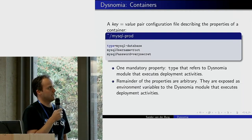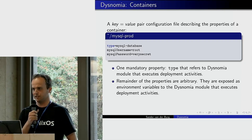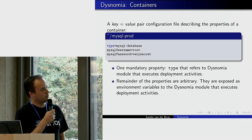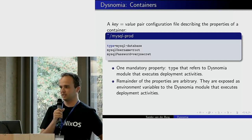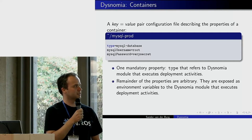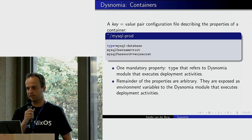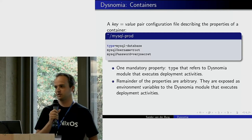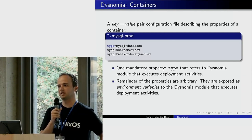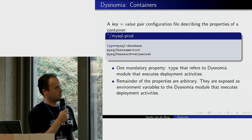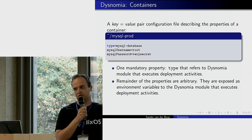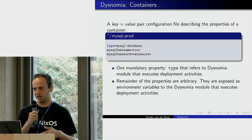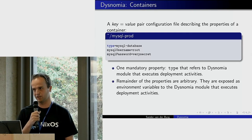You also need to specify which containers you want to deploy to. The container configuration file is a simple key-value pair configuration file. The only mandatory property is the type property, which refers to the Dysnomia module that executes the deployment tasks. The remaining properties are arbitrary — Dysnomia exports them as environment variables to the Dysnomia module. For example, to deploy a MySQL database, you need the credentials to connect to the MySQL server, and the Dysnomia module knows how to use those to execute the MySQL CLI and run your script.